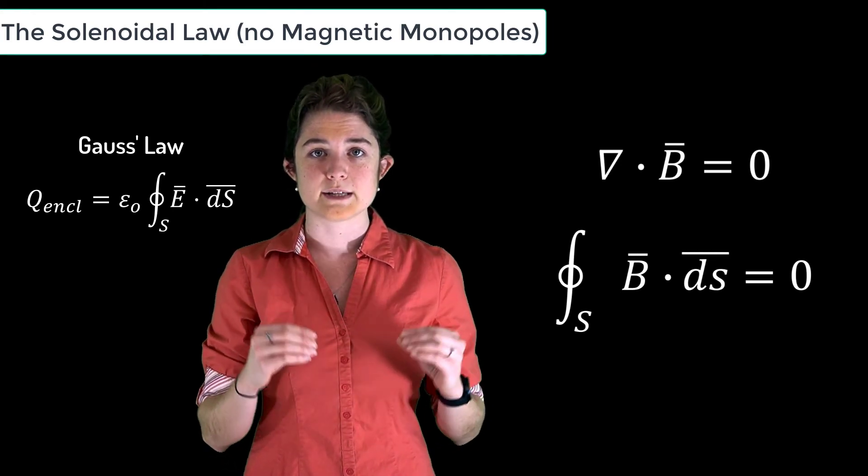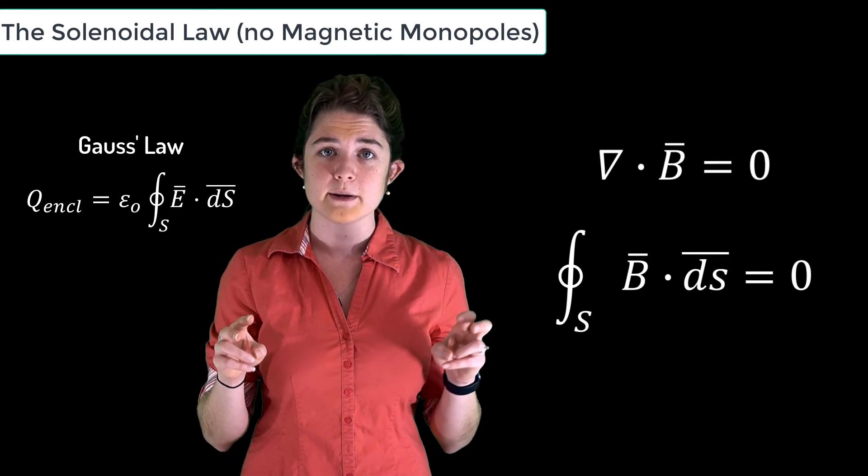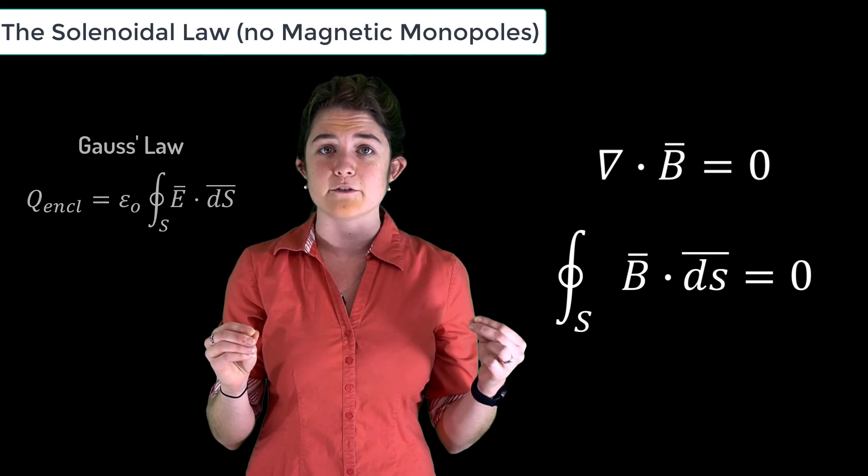That's because the total magnetic charge contained by any volume is zero. Every positive pole is necessarily accompanied by a negative pole.